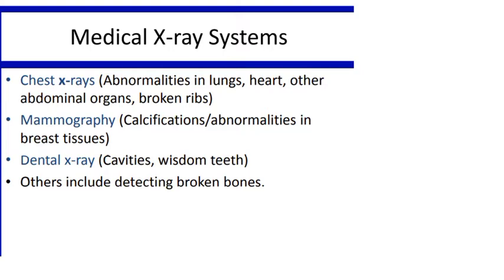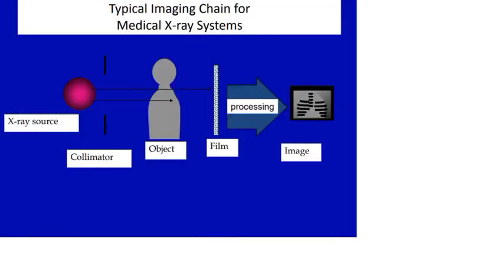X-rays were invented in 1895 by Roentgen, a professor from Germany. The main applications include chest X-rays, which are used for detecting abnormalities in internal organs like lungs, heart, and abdominal organs, and even for finding broken ribs due to accidents. Mammography is a special type of X-ray system used for finding abnormalities in breast tissue. Dental X-rays are uniquely designed for imaging only the teeth.